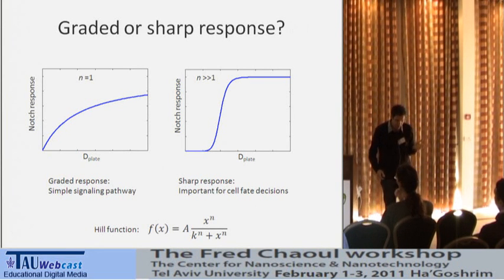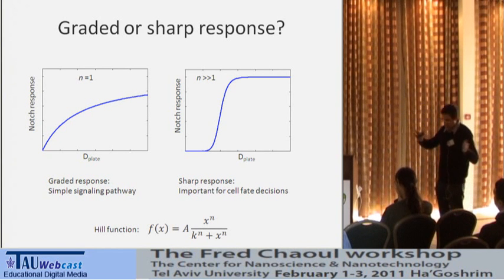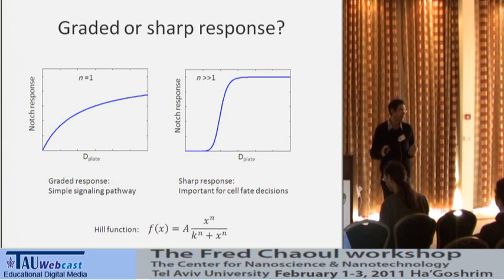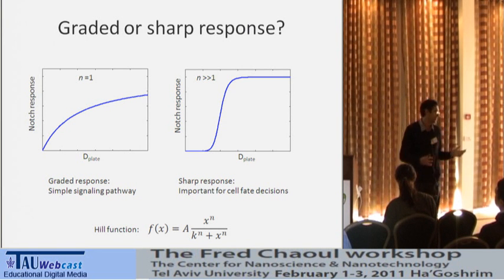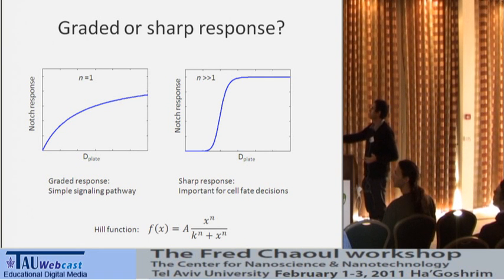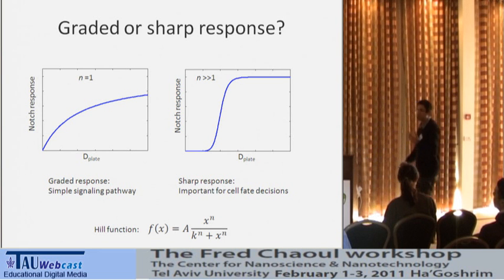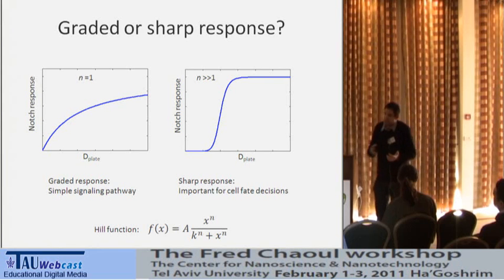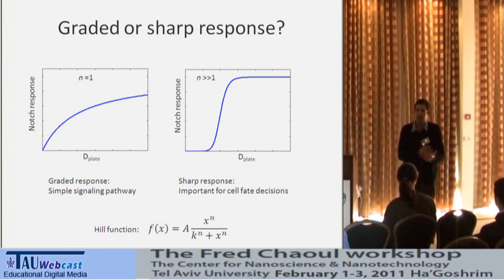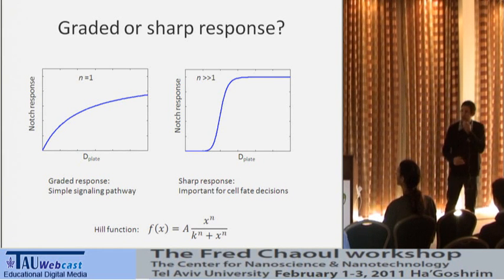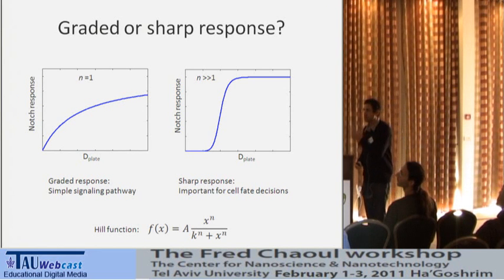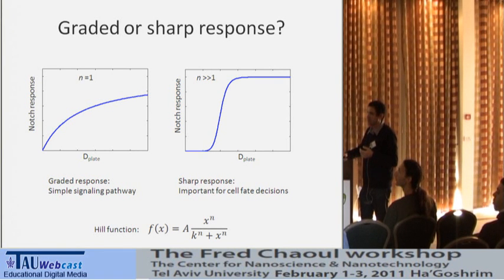Before showing the data, let's think about what we expect. There are two limits for the Notch signaling response. One limit is that the Notch signaling response is proportional to the amount of Delta — a linear response followed by saturation. This makes sense because Notch is a relatively simple pathway: one ligand binds to one Notch, generating one intracellular domain. The other limit is a very sharp switch-like response to the level of trans-Delta — expected because Notch signaling drives binary cell fate decisions.